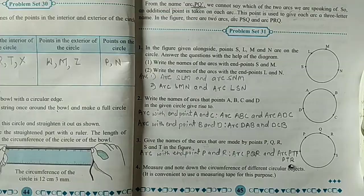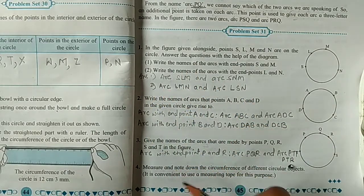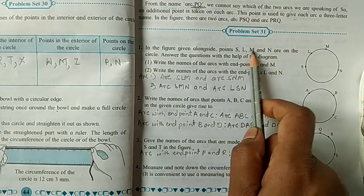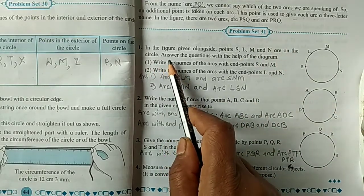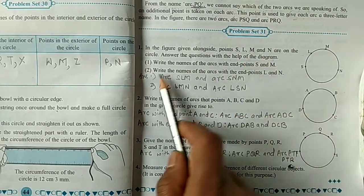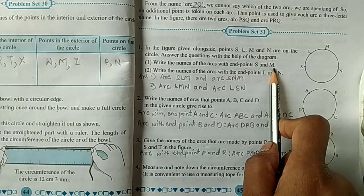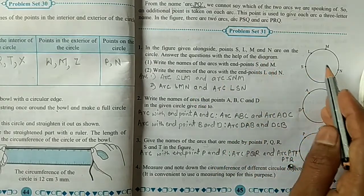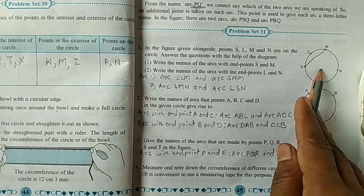I am going to solve the first example, so everyone will solve the remaining examples at home. In the figure given alongside, points S, L, M, and N are on the circle. Answer the questions with the help of the diagram. First, write the names of the arcs with endpoints S and M. Okay, so we divide this arc with points S and M. So we get two arcs.